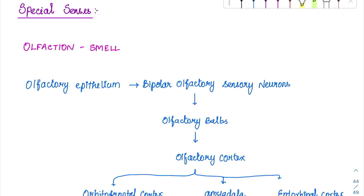Coming to the special sense that is olfaction — it is the sensation of smell. Whenever there is an olfactory defect, it is called anosmia. Hyperosmia can also be there, where they are called as having a good sense of smell, or parosmia, which is an altered sensation of smell.